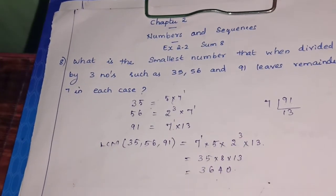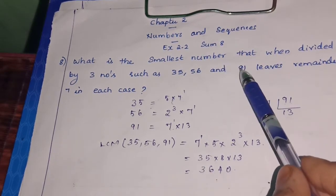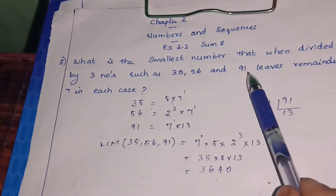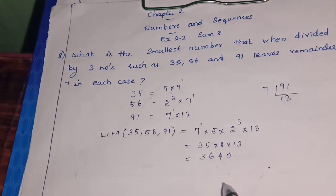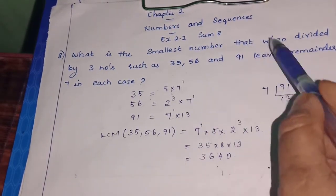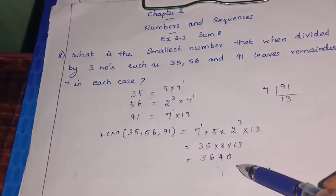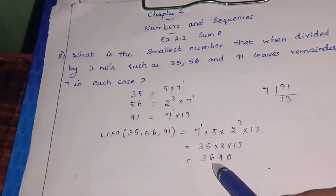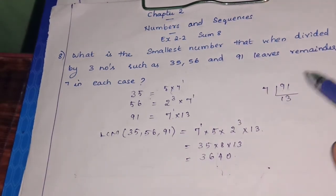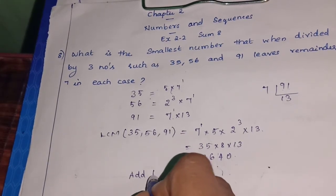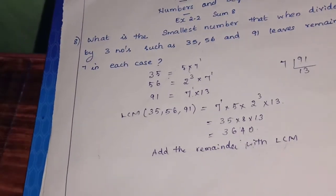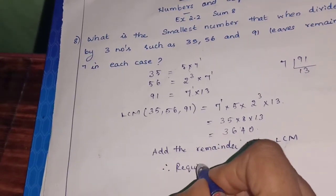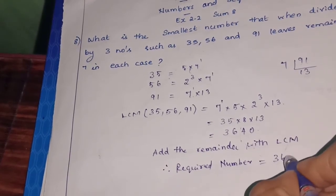So 3640 is the smallest number exactly divisible by 35, 56, and 91 — meaning remainder is 0. But we want a remainder of 7. So what do we do? We add the remainder to the LCM. Therefore, the required number = 3640 + 7 = 3647.